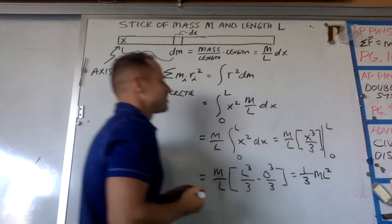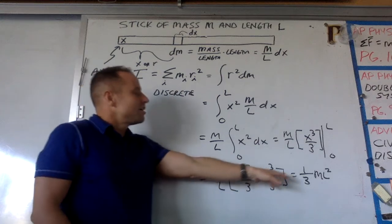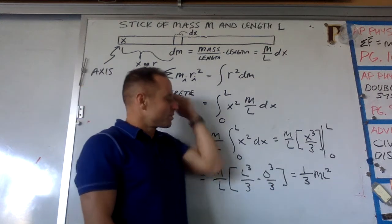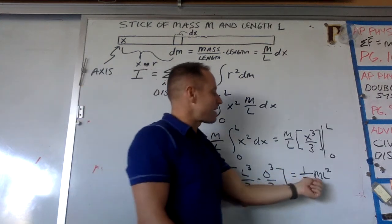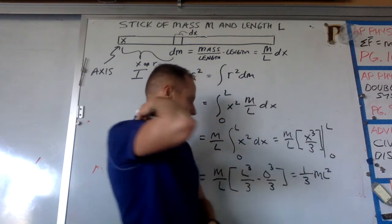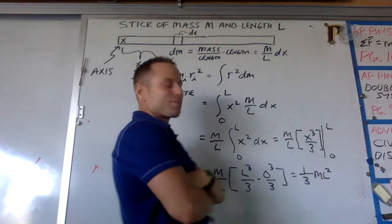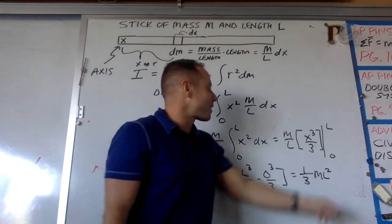Now my advice to you as you continue working in physics and calculating moments of inertia is always note that your result for a moment of inertia is going to be some kind of a mass times a distance squared. So if you are grinding through a big calculation and you end up with mass times distance to the fourth or something, you screwed up. So just something to watch out for.